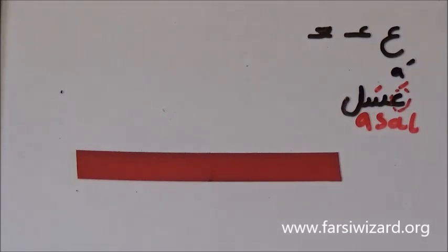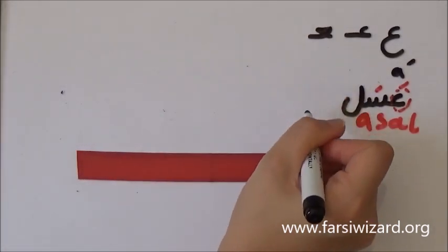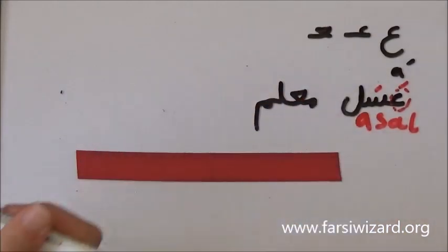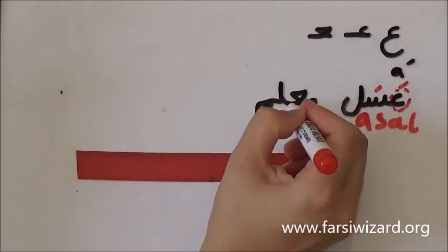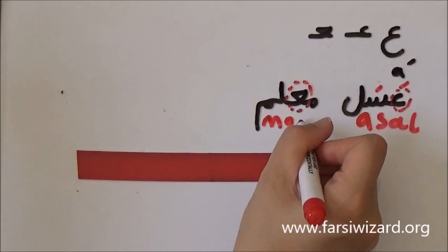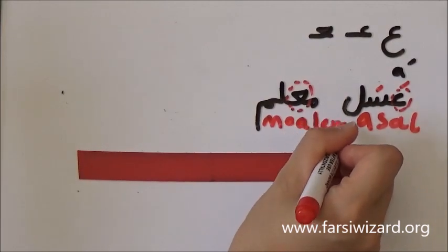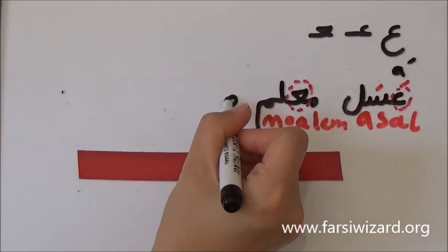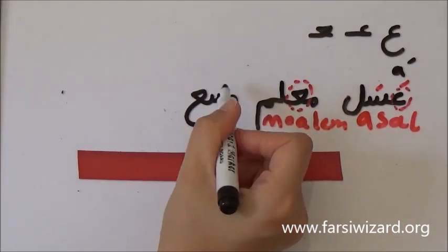If you notice, this letter can also show up in a rectangular form in the middle of a word. For example, here we have the word MOALEM, which means teacher. As you can see, we have the AIN appearing in the middle — that's why it kind of looks like a triangle. MOALEM. So if you start the word with AIN you'll have a different form, but if it appears in the middle of the word, it looks like a triangle.